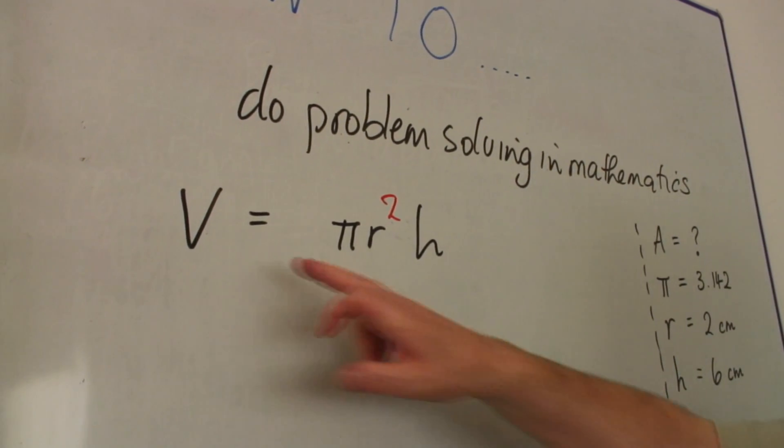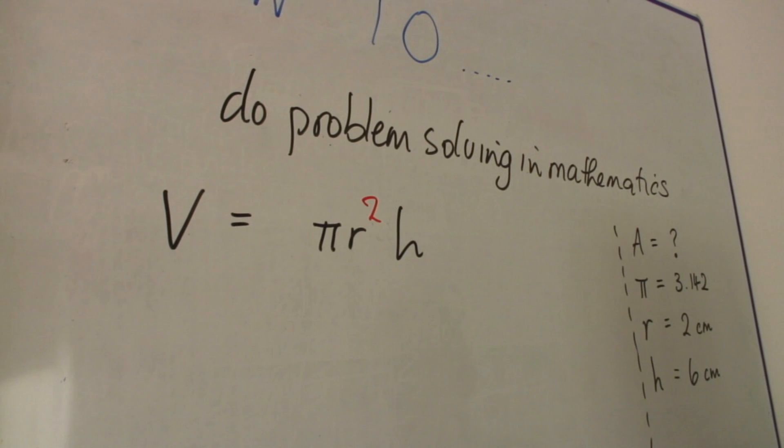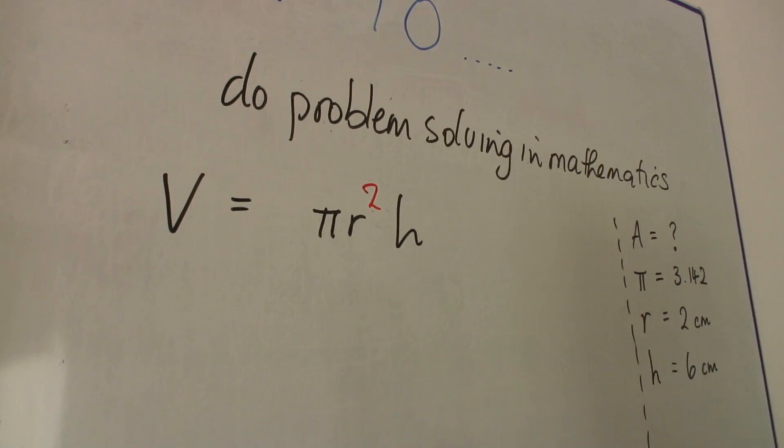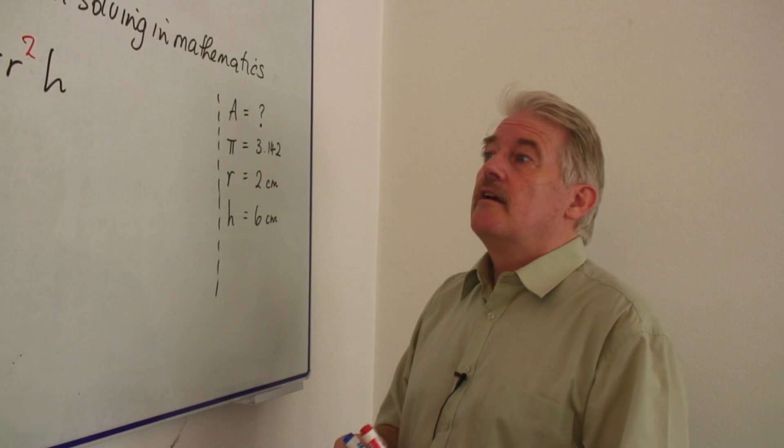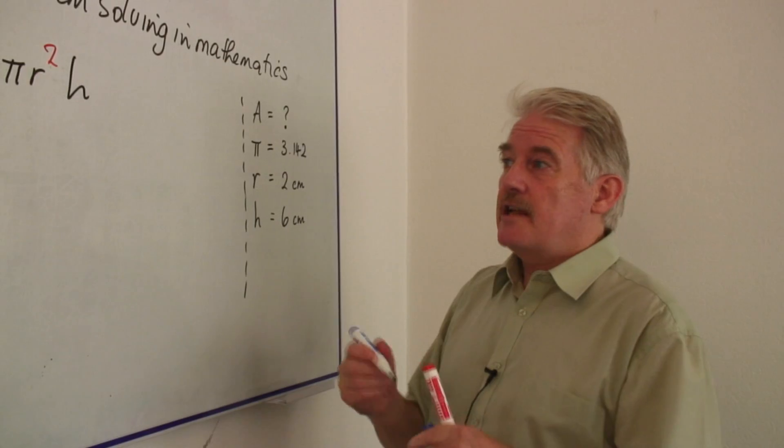Okay, so this formula is actually the formula for the volume of a cylinder. So it's a fairly straightforward problem, but how do we actually go about doing it? And the first thing we have to say is, as I've said, step by step.